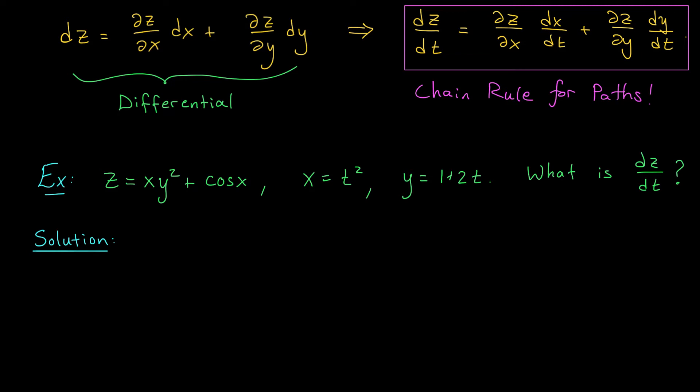Well, according to my chain rule for paths, I can compute this by computing the partial derivatives with respect to x and y and the derivatives of x and y with respect to t. So let's start with our partial derivatives. The partial derivative of z with respect to x, according to our definition up here, should be y squared minus sine x and the partial derivative of z with respect to y should be 2xy.